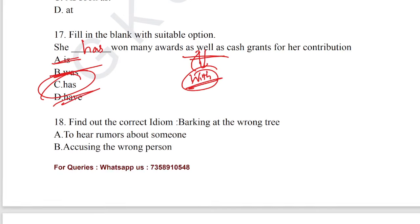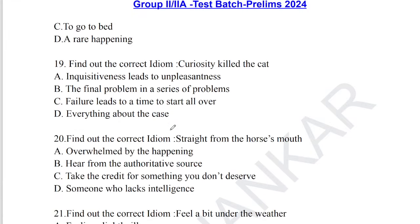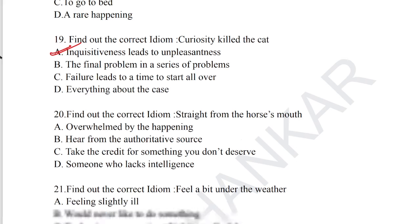Question number 18: find out the correct idiom. 'Barking at the wrong tree' means accusing the wrong person. That is the correct explanation for question number 18. Question number 19: 'Curiosity killed the cat' means inquisitiveness leads to unpleasantness. Option A is the correct answer for question number 19.